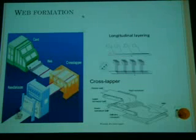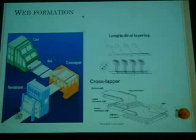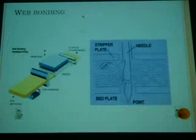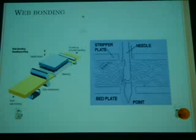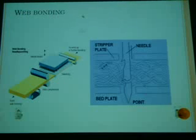After the carding of the alginate fiber, we make the web either by cross lapping or by parallel lapping — either technique can be used. After the web formation, we impart strength to the web by entangling the fibers with each other. The mechanical bonding technique called needle punching is used for bonding the web.